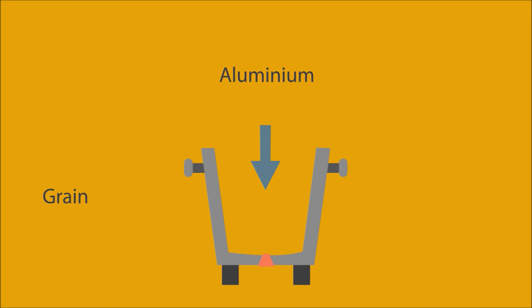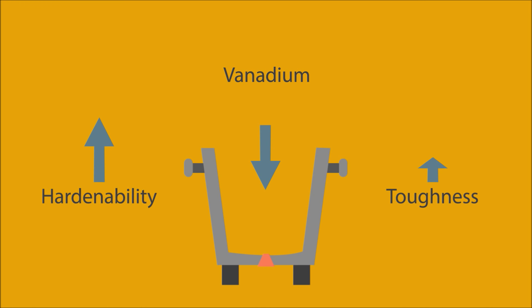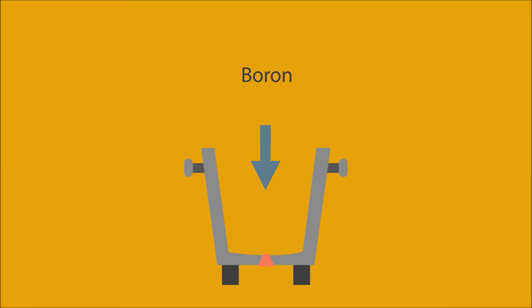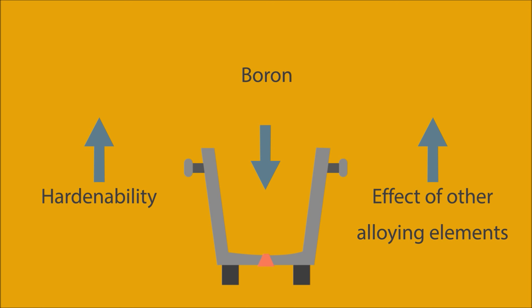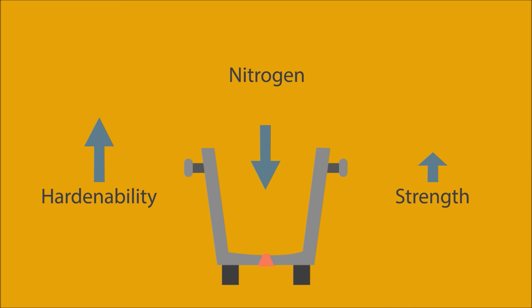Aluminium is primarily used to deoxidize the steel. It can combine with nitrogen to form nitrides, which can restrict grain growth. Niobium (also called columbium) in small amounts can increase yield strength, tensile strength, and toughness. Vanadium is used to increase the hardenability and toughness of steels through its ability to restrict grain growth. Boron can significantly increase the hardenability of steels and can enhance the effect of other alloying elements. Nitrogen is often added in combination with other elements to form nitrides; these nitrides increase hardness and tensile strength but at the expense of toughness and ductility.